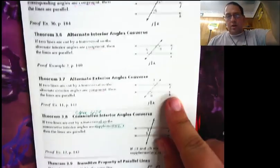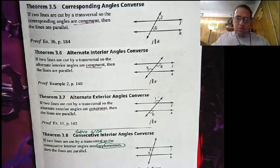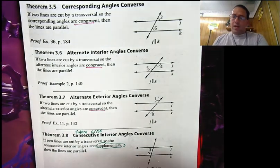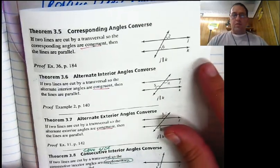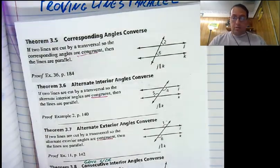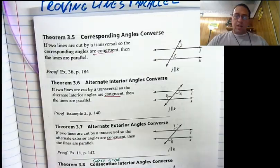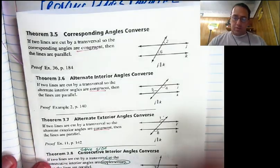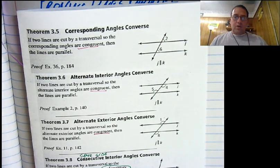Just to go over this again: the converses are used to prove that lines are parallel if you know the angles are congruent or supplementary. The theorems are used to prove the angles are congruent if you already know the lines are parallel. If you know the lines are parallel — use the theorem to say the angles are congruent. If you know the angles are congruent or supplementary — use the converse to prove the lines are parallel. Hopefully you found that useful, and I will see you in the next video.